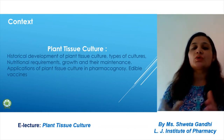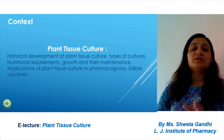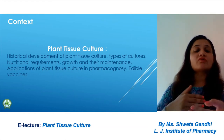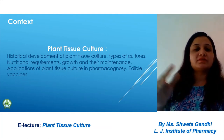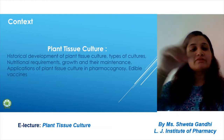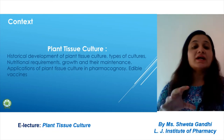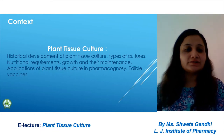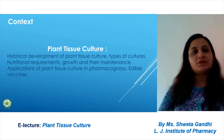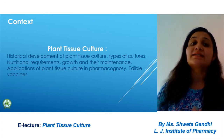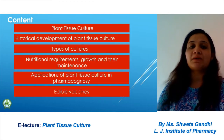Next is growth and maintenance. In growth and maintenance you have to learn about the lag phase, log phase, exponential phase, and the stationary phase — these are different types of graphs between the types of culture and the time taken by the culture. At last we will study about the applications of plant tissue culture and one more topic, edible waxing, which also is included in plant tissue culture.